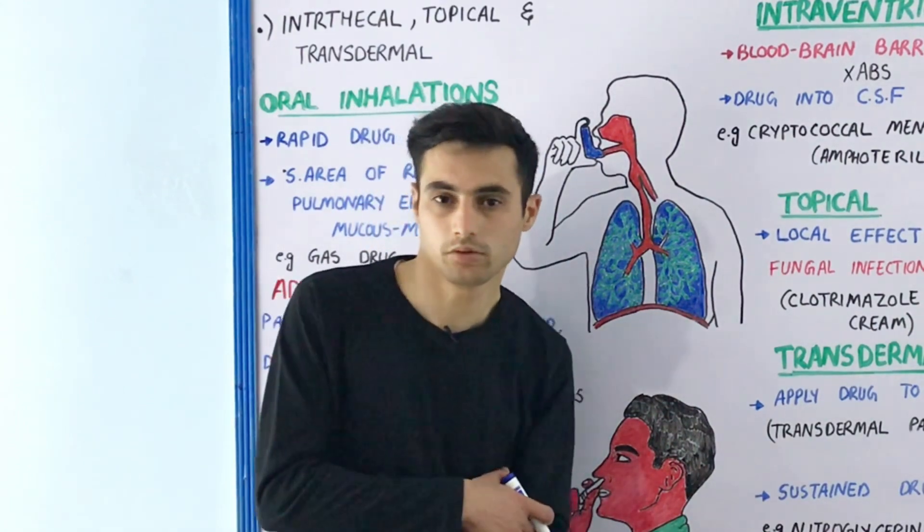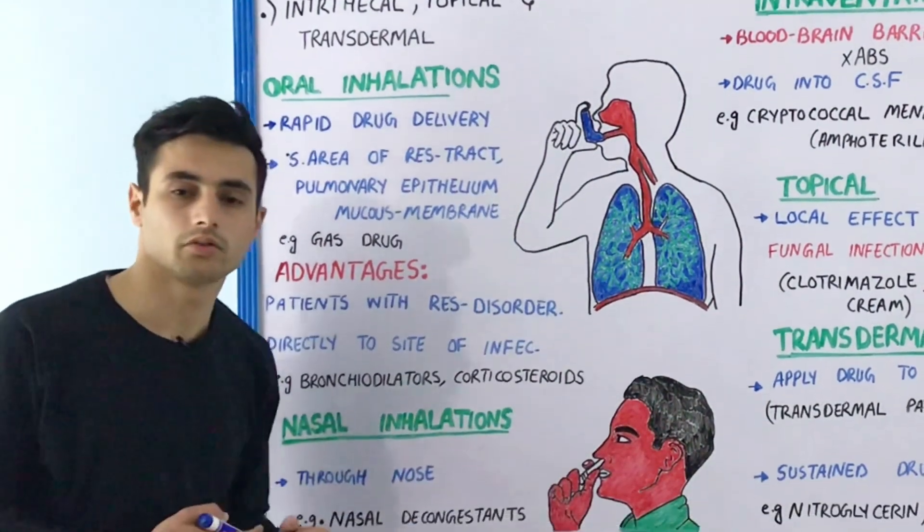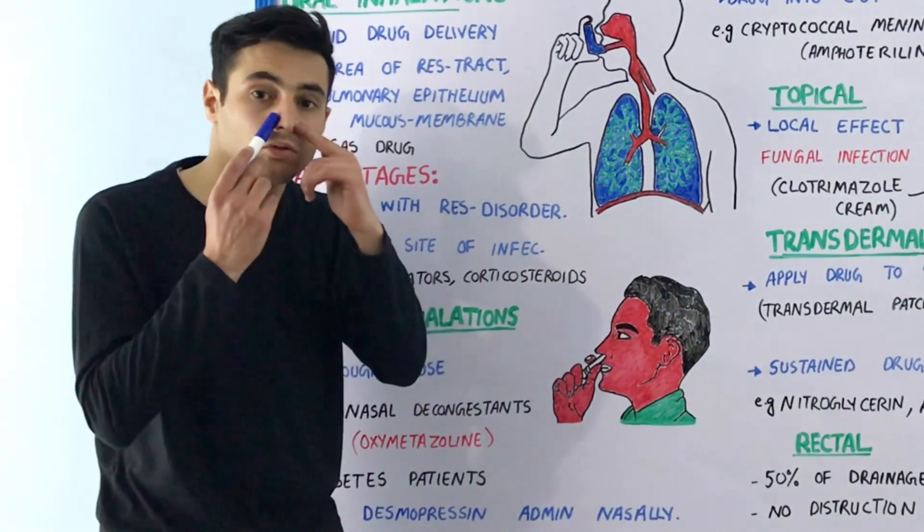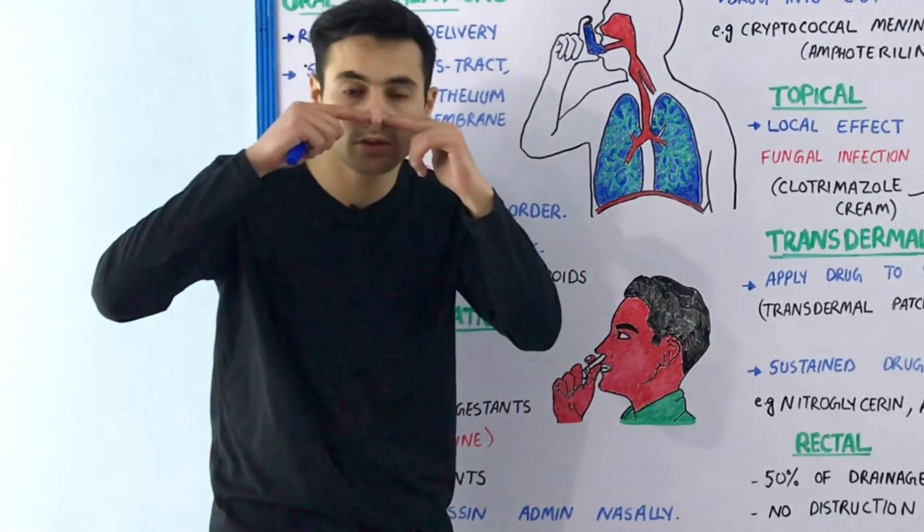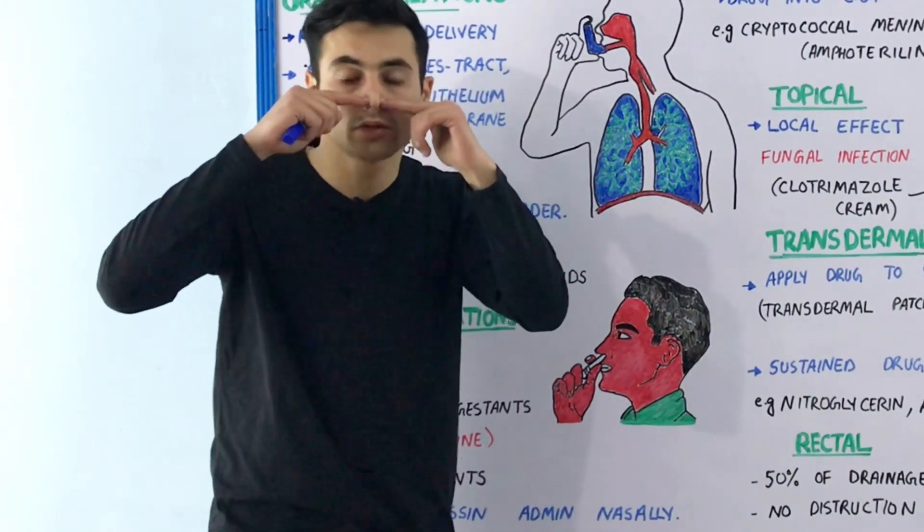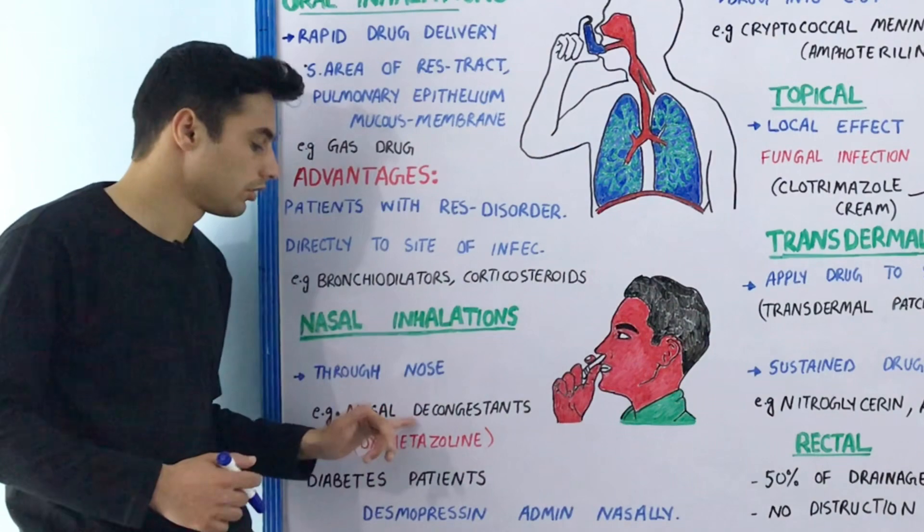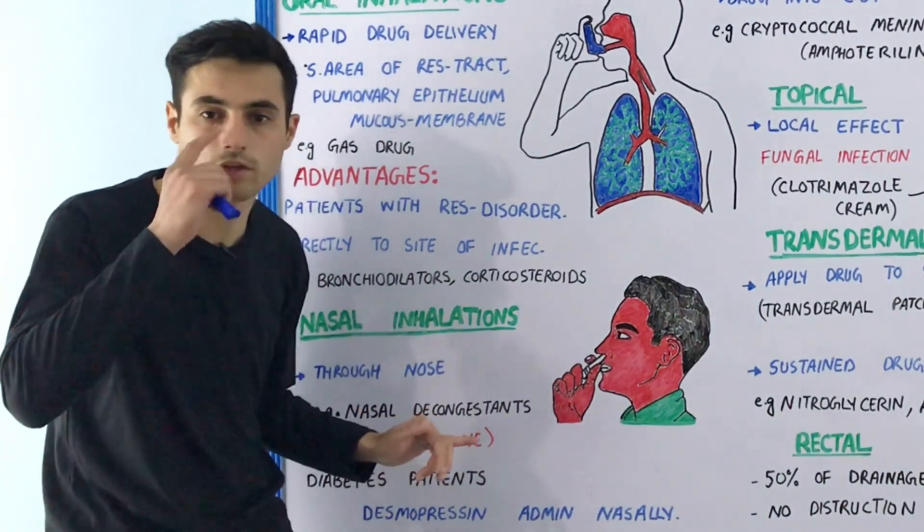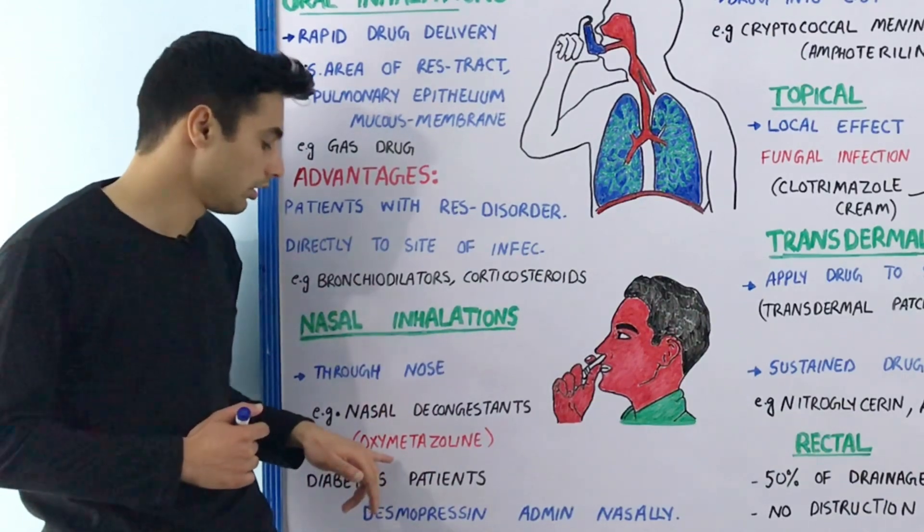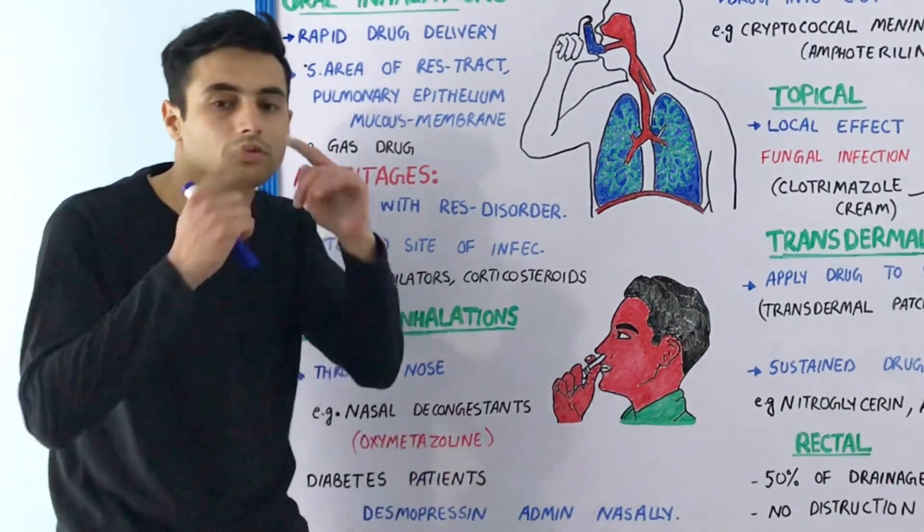Nasal inhalations are medications which you take directly through your nose. For example, if you have a stuffy nose and want to get rid of nasal congestion, you will use a nasal decongestant. A famous example is oxymetazoline.